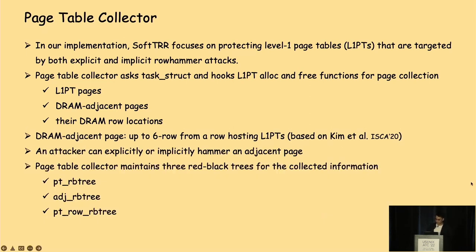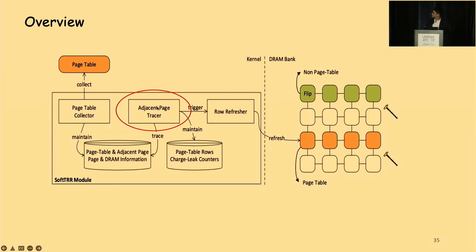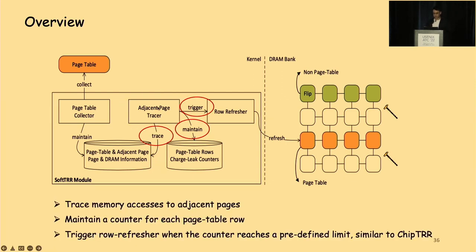To maintain the collected page and DRAM row location information, we reuse the kernel's red-black tree structure and have three red-black trees. The second component is the adjacent page tracer. This component traces accesses to the maintained adjacent pages. If an access is traced, the adjacent page tracer maintains and updates a counter called the charge leak counter for its relevant page table page row. When the counter reaches a predefined limit, the third component — the row refresher — is triggered, similar to Chip TRR.